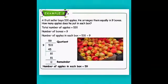Next sum — word problem. Example 2: A fruit seller buys 531 apples. He arranges them equally in 9 boxes. How many apples does he put in each box? A large number is divided by a small number. Solution: total number of apples = 531, number of boxes = 9, so apples in each box = 531 ÷ 9.